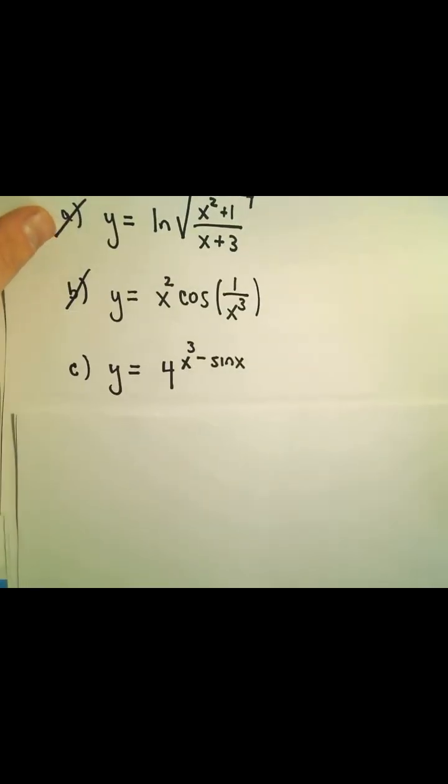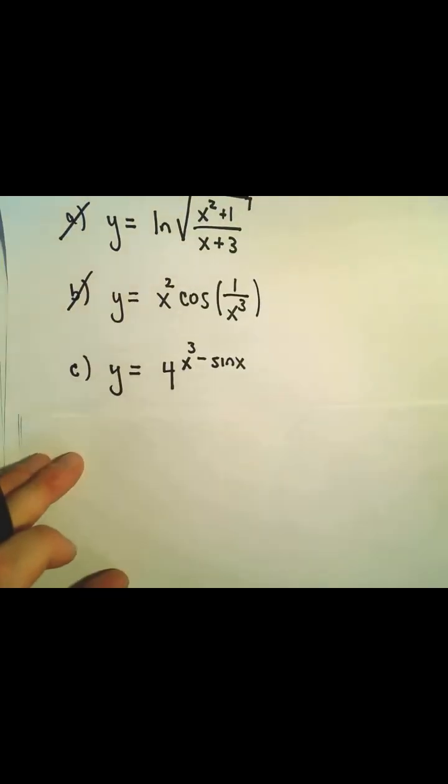Here we're going to find the derivative of 4 to the x³ minus sin x, the x³ minus sin x all being in the exponent. So here we're just going to use our a to the f of x derivative formula.